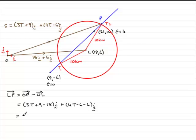And if we clean this up, what we've got is 3T minus 9 in the I direction, and as for the J components, we've got 4T minus 12 in the J direction. Now we know that the magnitude of LP equals 10, 10 kilometers, this distance here.